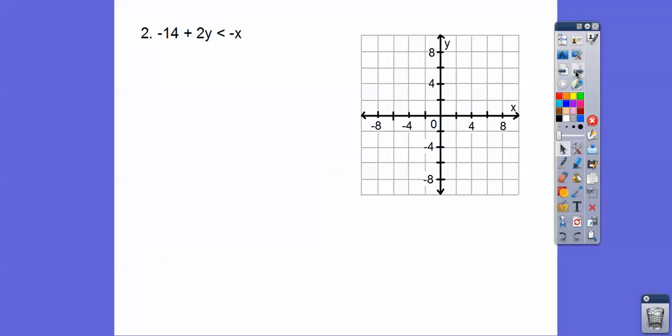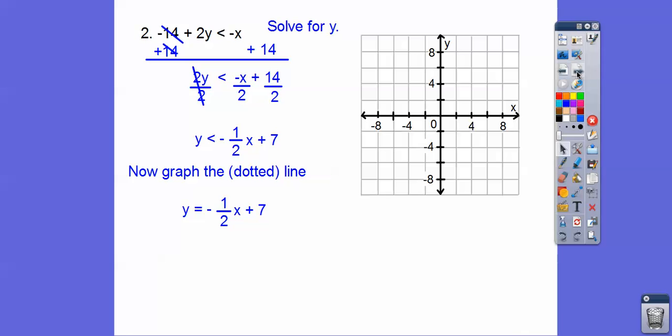All right, let's try this one. So this one is going to be a dotted line because it's just less than. Let's solve for y again. So we'll add 14 to both sides. Then we'll divide by 2.